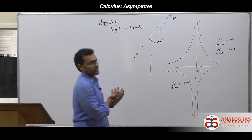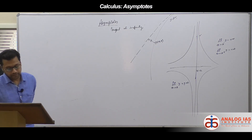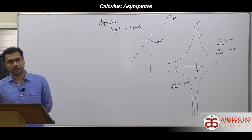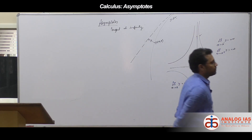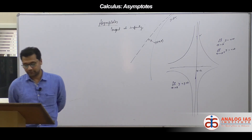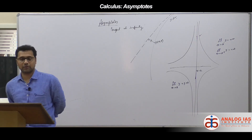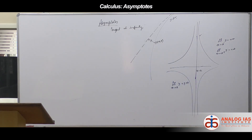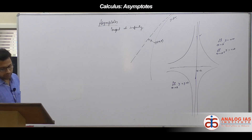A straight line is said to be an asymptote of the curve y = f(x) if the perpendicular distance of the point P(x, y) on the curve from the line tends to 0 when both x and y tend to infinity.